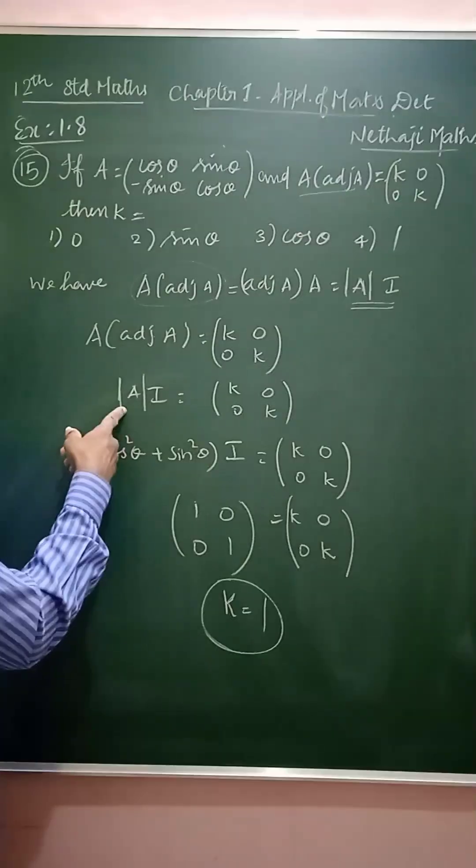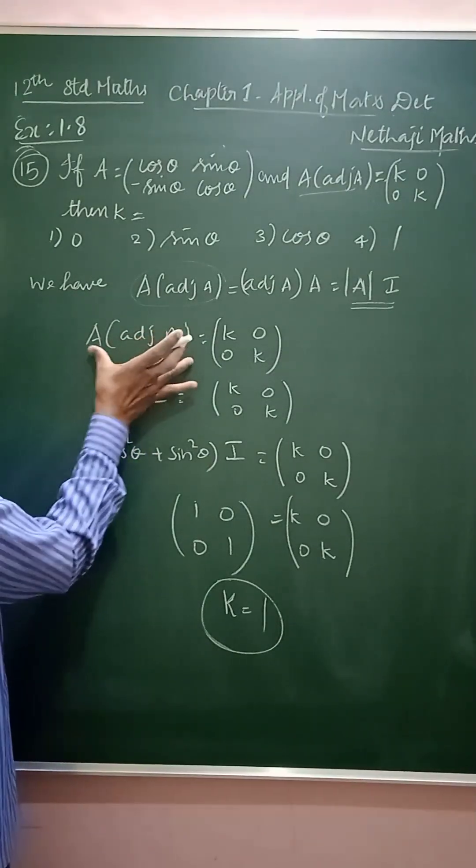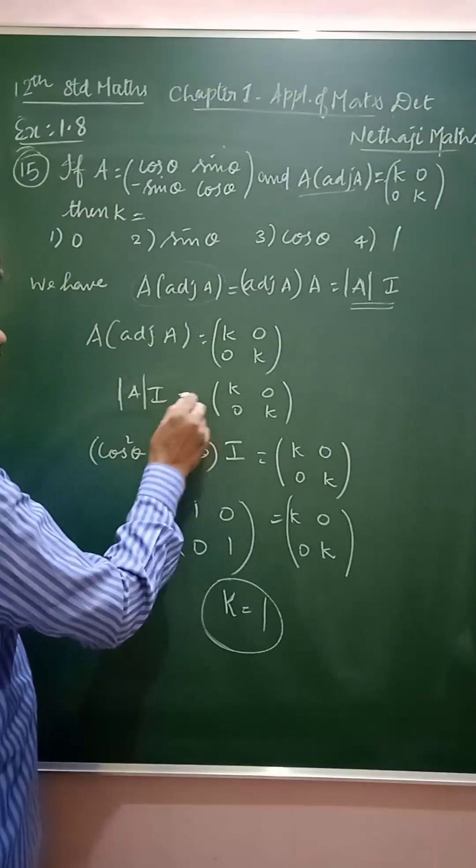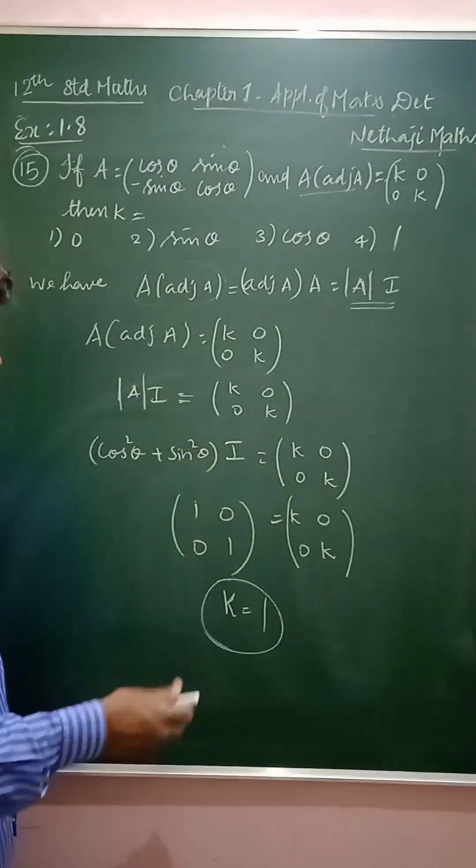I will use the determinant of A into I. The A into adjoint of A can be written as determinant of A into I, which is equal to k0 0k.